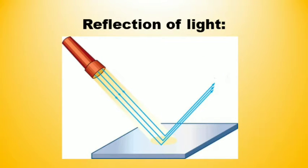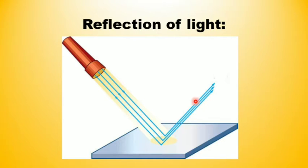Students, when light strikes a smooth, shiny surface, it bounces back. This characteristic of light is known as reflection of light. Jab light kisi smooth, shiny surface pe padti hai, to wo bounce back kar jaati hai, aur is characteristic of light ko reflection of light kehte hain.